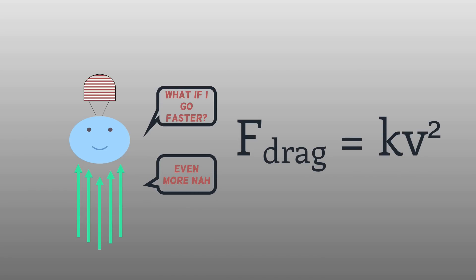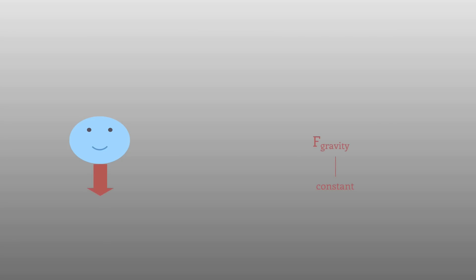So how does this relate to terminal velocity? Well, when you're falling, two things are happening: gravity, which is roughly constant, pulls you down, and all those air molecules push you up. Subtract one from the other, and we see that generally gravity wins out, and so you speed up as you approach the ground.